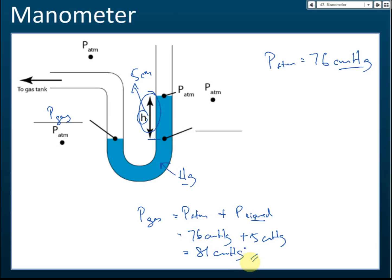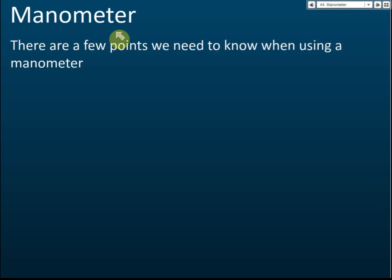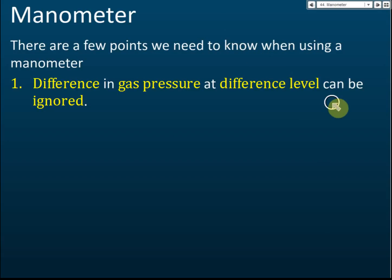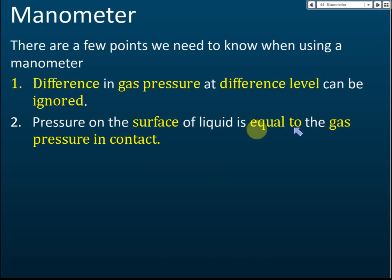That is how we measure gas pressure using a manometer. To summarize the key points: first, the difference in gas pressure at different levels can be ignored — we assume the gas pressure is the same throughout the gas space.